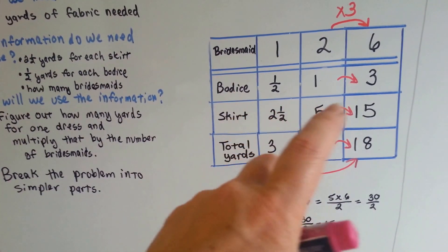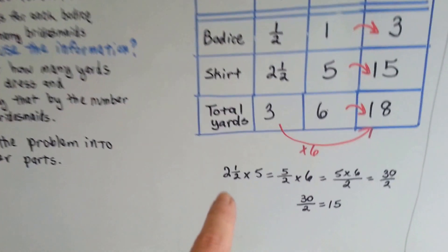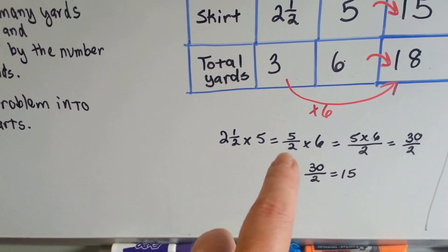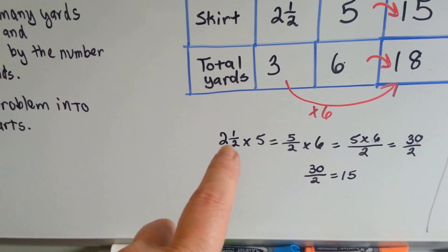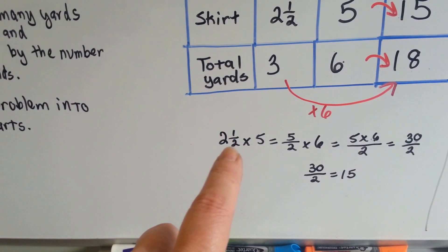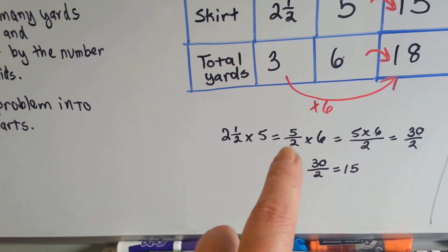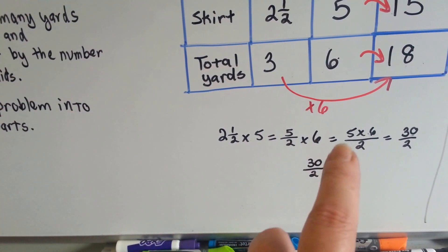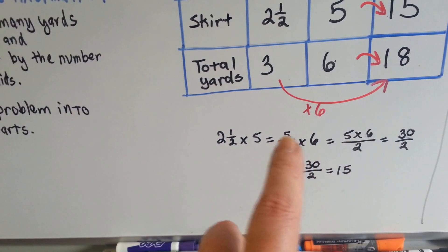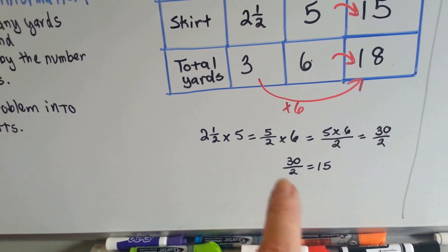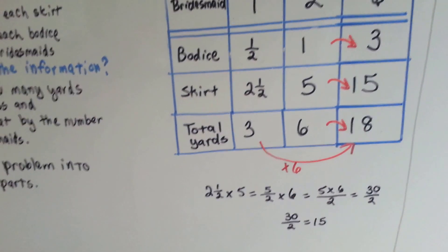Two and a half times five is fifteen because if we turn the two and a half into an improper fraction, it becomes five halves. Two times two is four plus the one numerator is five over two. Five over two, five halves times six is the same thing as five times six over two. We put the five and the six over the two. That equals thirty over two. And that is fifteen.